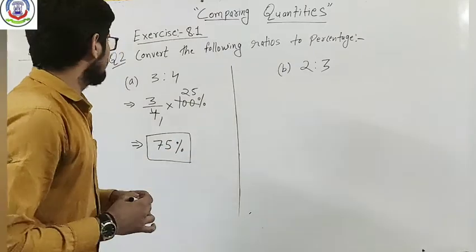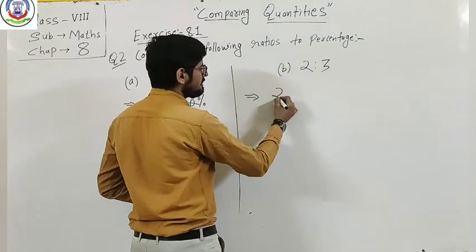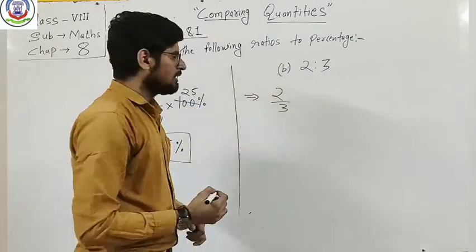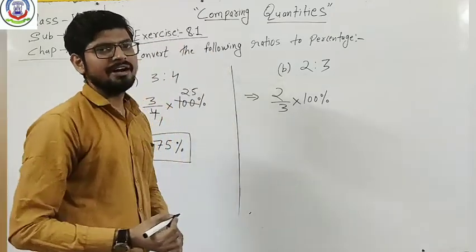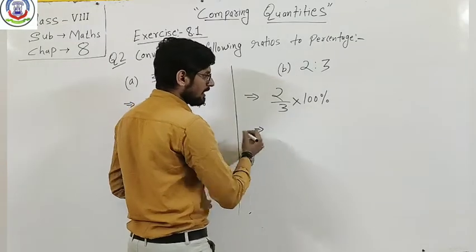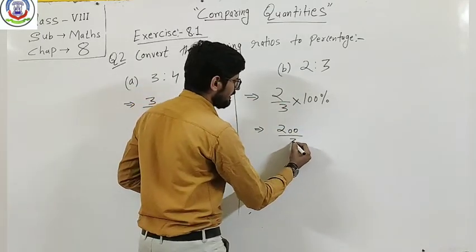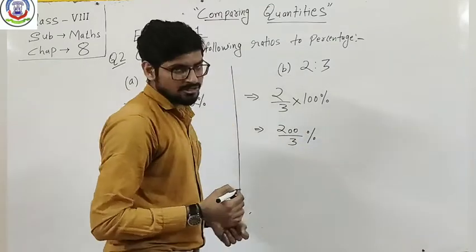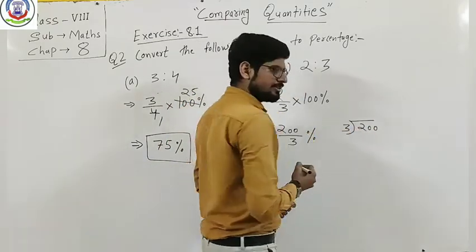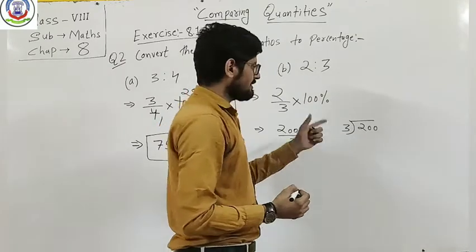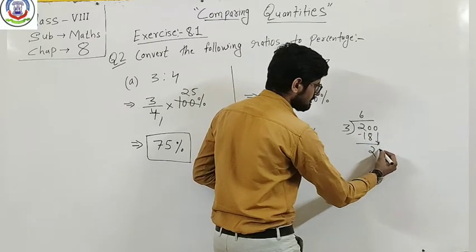Same here, second question: 2 is to 3. We will change to fraction, that is 2 by 3, multiplied by 100%. We can write this as 200 divided by 3 percent. 200 divided by 3: 3 sixes are 18, subtract to get 2, bring down 0. Again 3 sixes are 18, you get remainder 2.